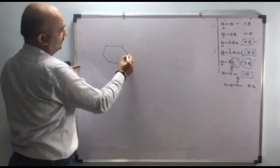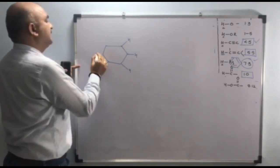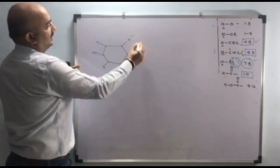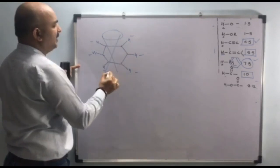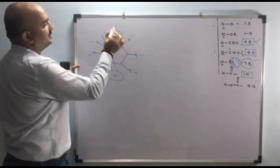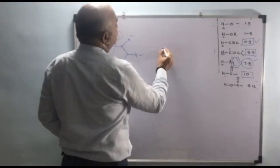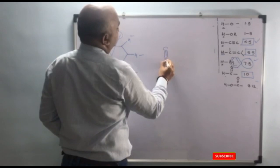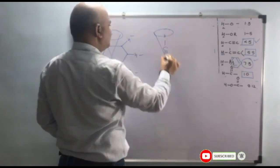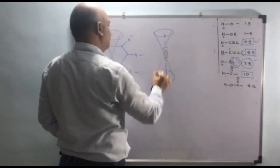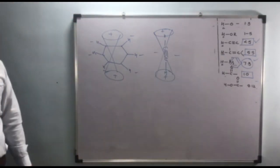Most importantly, for benzene: the protons which are present in the plane of the benzene ring are deshielded, while the protons present above and below the plane of the benzene ring are shielded. For the acetylenic group, the protons present within the cone along the molecular axis are shielded, while the protons present outside this cone region are deshielded.